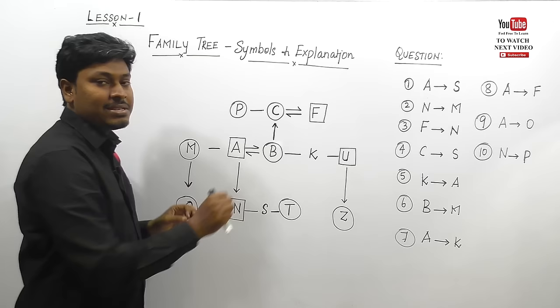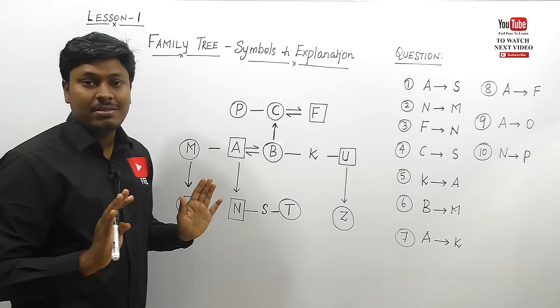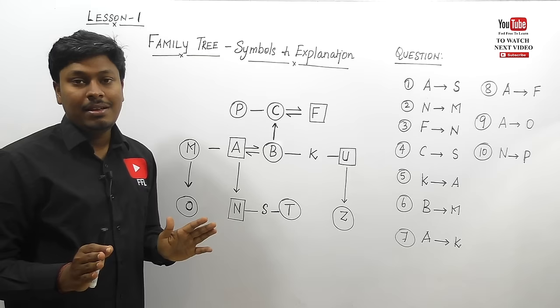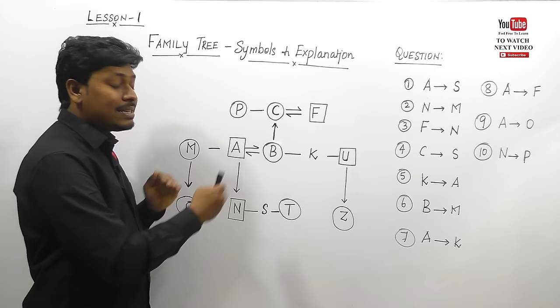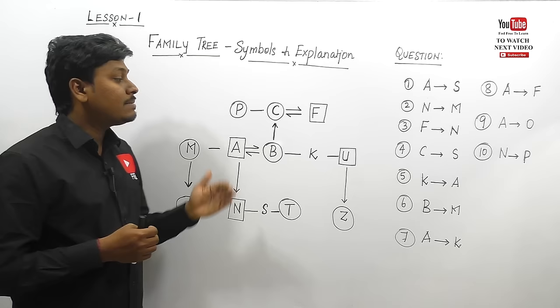If you can answer all 10 questions from this family tree, you've completed 60% of blood relation. Lessons number two, three, and four will be simple if you know this concept. If you can't understand this concept, kindly learn it again and again until you know it 100%.